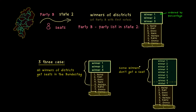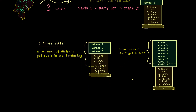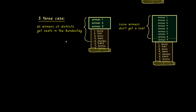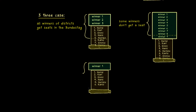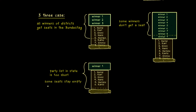There is a third case which should not happen but is theoretically possible: the state party list is just too short, meaning the party does not have enough people to fill their seats. The party didn't find enough people before the election to put on the list, and therefore some seats in the Bundestag stay empty — unoccupied — which means the parliament could have less than 630 seats in this case.